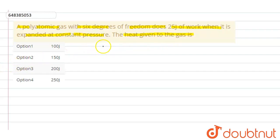This question is based on the topic thermodynamics. Here it is written that the polyatomic gas has six degrees of freedom, that is f equals 6, and work done W equals 25 joules at constant pressure.